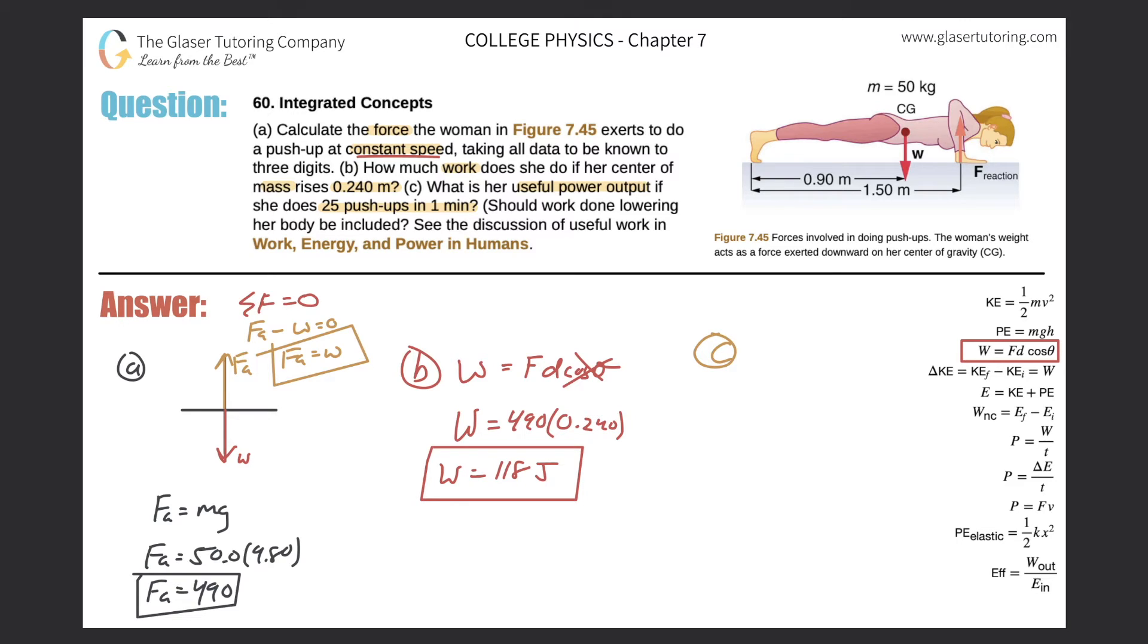So in actuality, yeah, she is applying the same amount of force whether she's pushing herself up at a constant velocity or lowering herself down at a constant velocity. Sounds kind of weird, but that's how it is. So now we're trying to find the useful power output. Okay, so we're thinking about power formulas. So maybe I'll highlight this one over here.